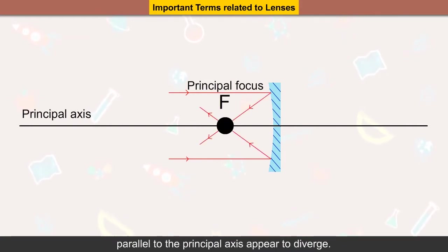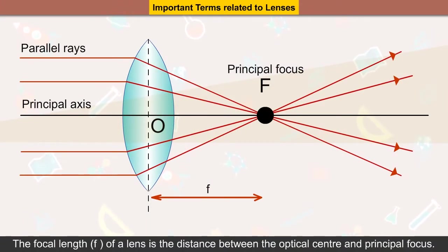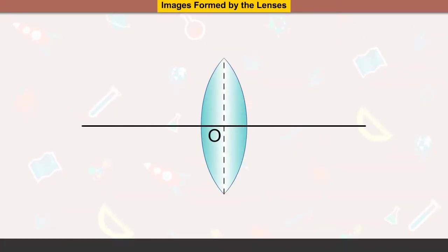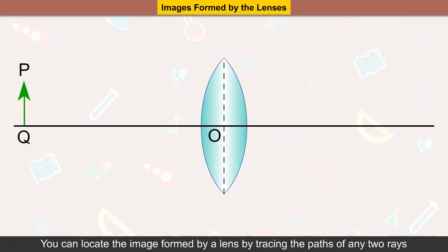The principal focus of a concave lens is a point on the principal axis from which rays parallel to the principal axis appear to diverge. The focal length of a lens is the distance between the optical center and the principal focus.